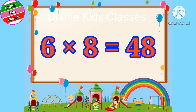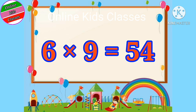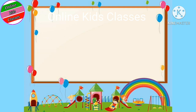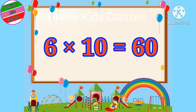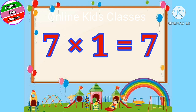Six eights are forty-eight. Six nines are fifty-four. Six tens are sixty. Seven ones are seven.